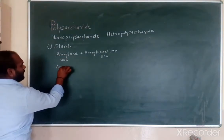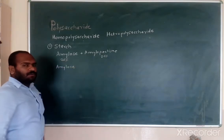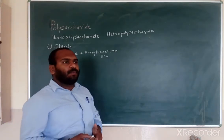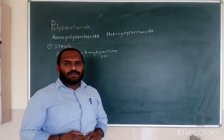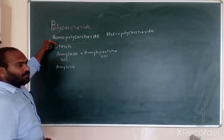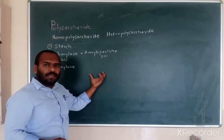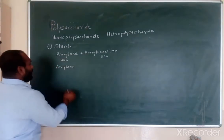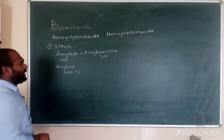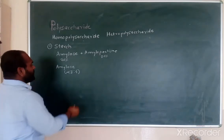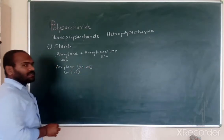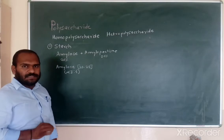Now let's consider amylose. Amylose is a linear polysaccharide made up of 20 to 25 units of the monosaccharide. It forms 20% of the starch component. Amylose is made up of D-glucose units linked by alpha 1,4 linkage. Generally there are 20 to 25 units of D-glucose present, and it is a linear polysaccharide.